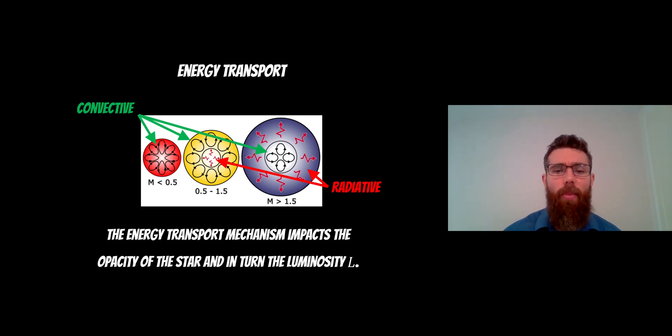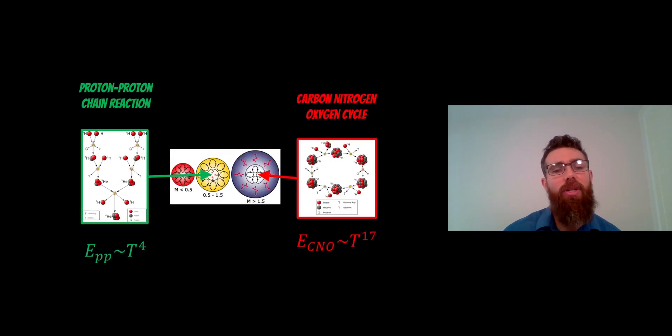So it's the energy transport mechanism which ultimately impacts the luminosity. And the reason for that is it's how opaque the star is and that will affect the luminosity and how it's transported. So this is obviously just for the central core, but it gives you no idea as to why you may have convection or radiative transport in the core.